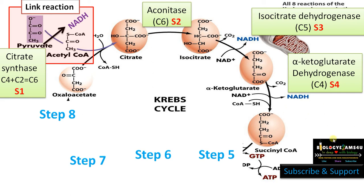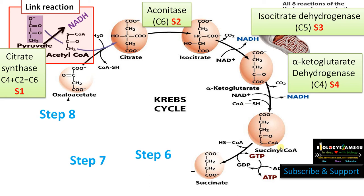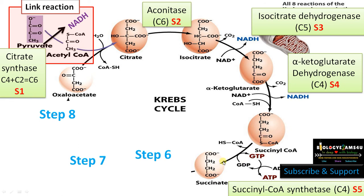Now we have succinyl coenzyme A. In step 5, succinyl coenzyme A is converted to succinate or succinic acid. In this step, GTP is formed — this is a substrate level phosphorylation. Succinyl coenzyme A reacts with GDP, forming GTP, and coenzyme A is released. GTP is soon converted to ATP. The enzyme involved is succinyl coenzyme A synthetase and succinate is a C4 compound.